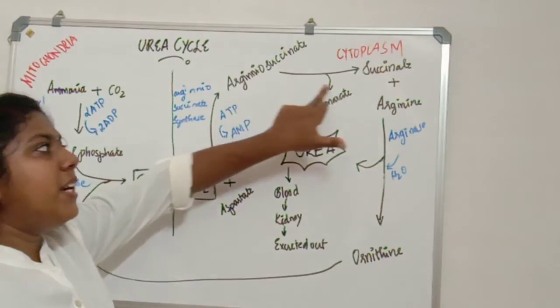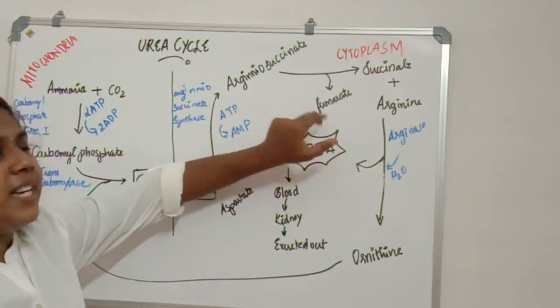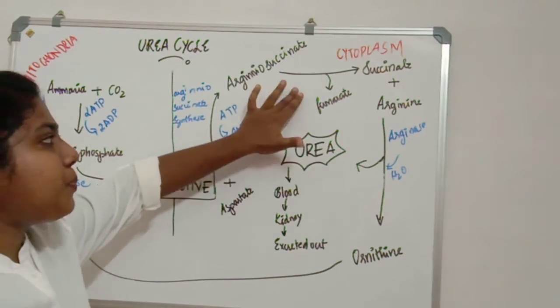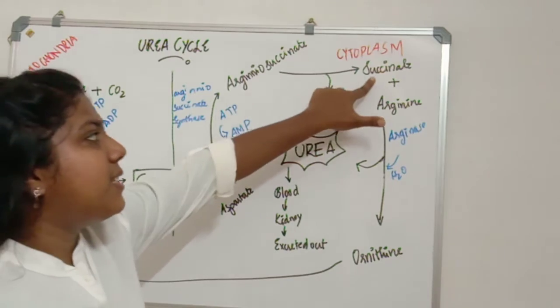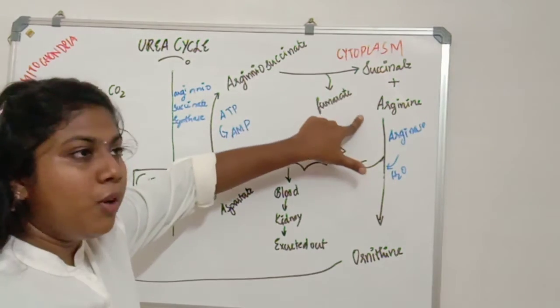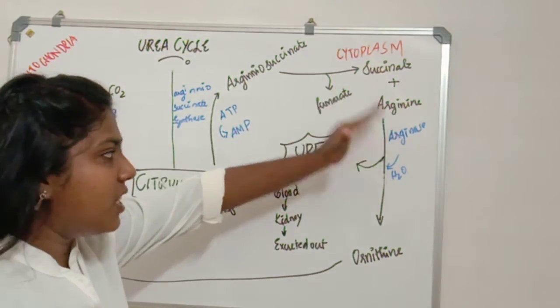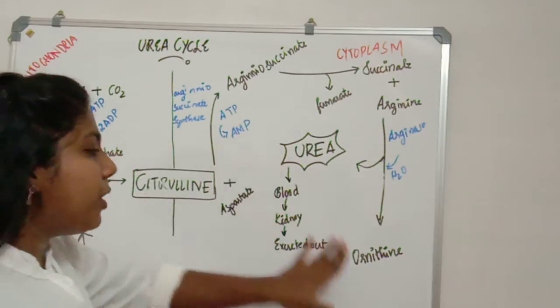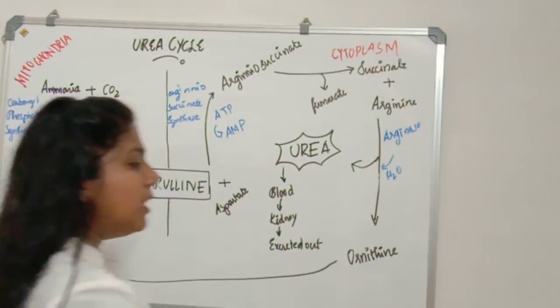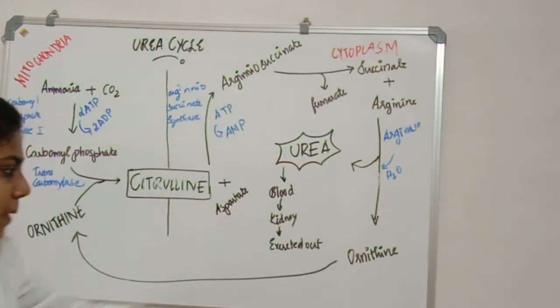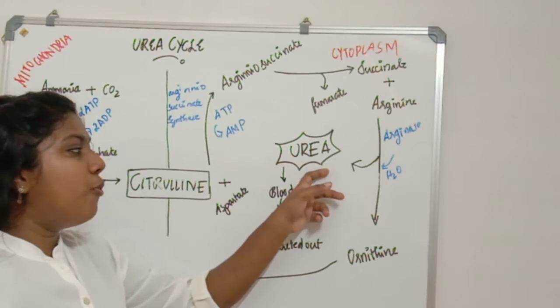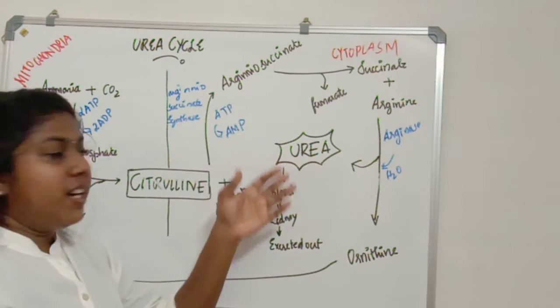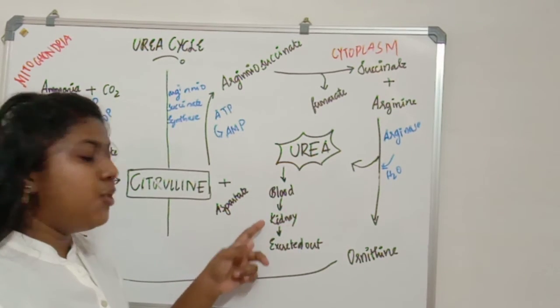The argininosuccinate breaks down to arginine and fumarate. This fumarate goes to the Krebs cycle. With the help of arginase, arginine forms our final urea and ornithine. This ornithine gets back from cytoplasm through mitochondria for getting combined with carbamoyl phosphate. The final form of urea gets transported from blood to kidney.